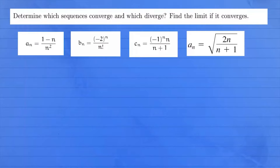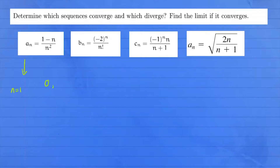Let's list some numbers for sequence a_n. Think of a sequence as a function on the natural numbers instead of the entire real numbers. If we list some terms: when n equals one, you get the first term — one minus one over one squared — which is zero. The second term, when n equals two, is one minus two over two squared, which is negative one over four.